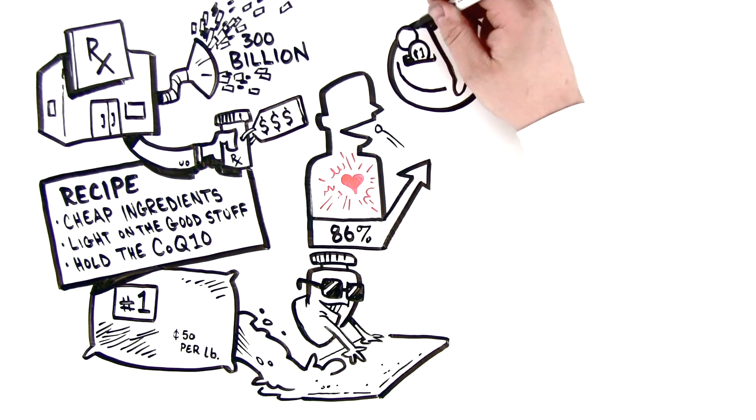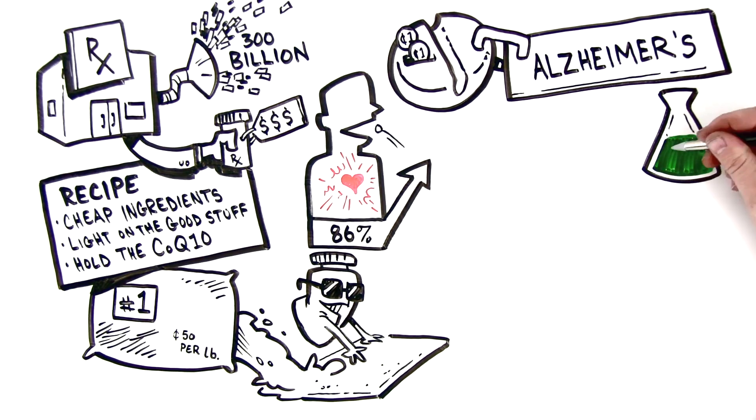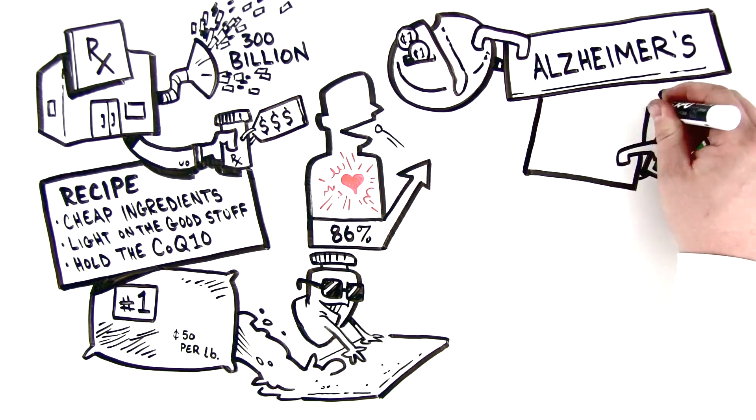Also disturbing is the fact that the typical multivitamin contains copper linked to Alzheimer's, and up to 14 other chemicals have been linked to potential health problems.